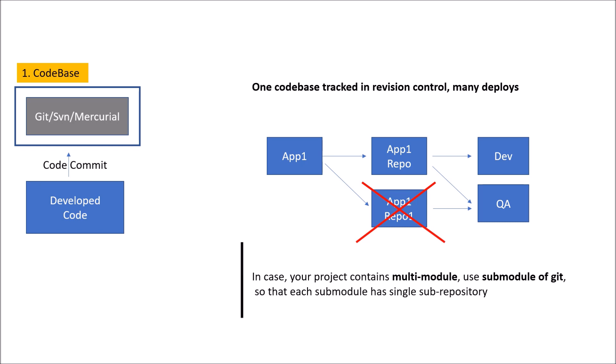Instead of having multiple repositories for a single application, use a single repository principle and deploy it to multiple environments. In case your project contains multi-module code, use Git sub-modules so that each sub-module has a single sub-repository. Always remember: there should be one codebase tracked in revision control, and from that codebase you deploy to multiple environments.